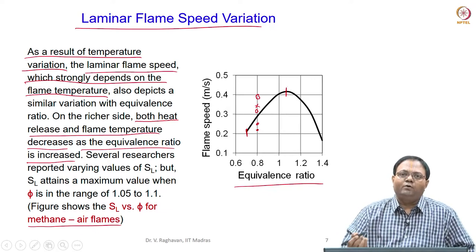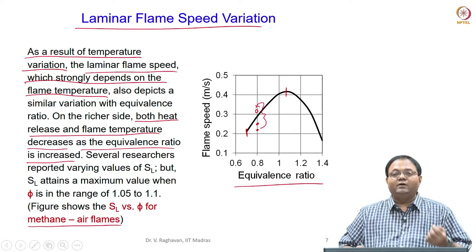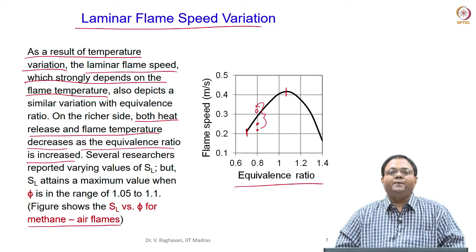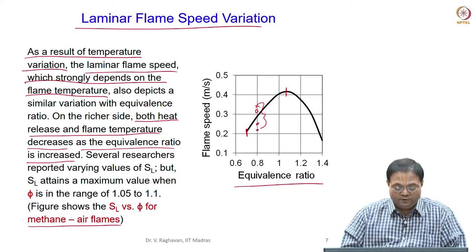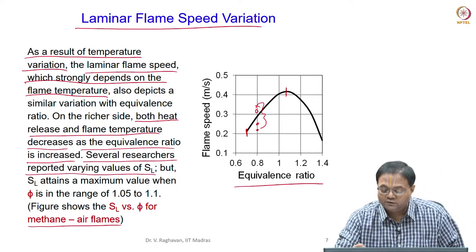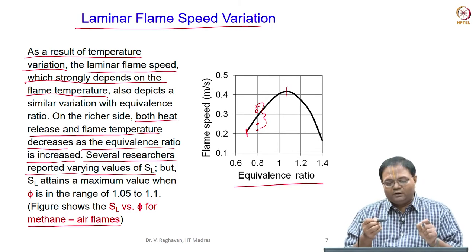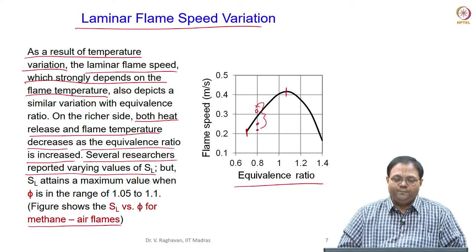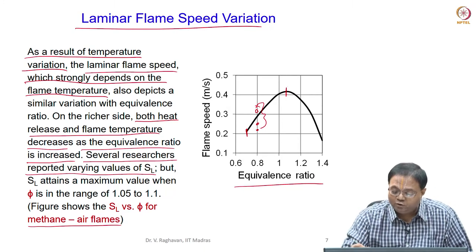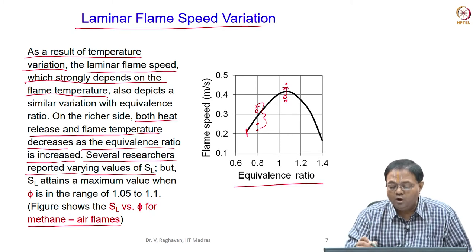There will be variation based upon what type of equipment is used. This variation is found due to the variation in the equipment used to measure laminar flame speed. Several researchers have reported varying values of SL — it is not a constant value. This means SL cannot be a property because it is not a unique value; it varies with the apparatus. So SL is basically an Eigen value. However, even though researchers found variations in absolute values, they also found the same trend of variation across all equivalence ratios.